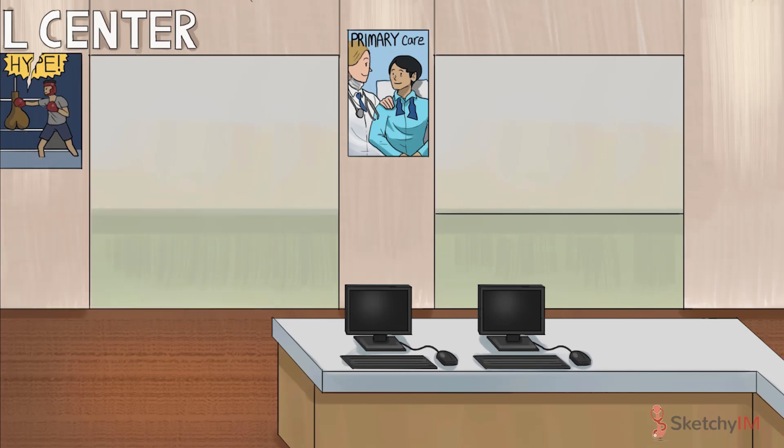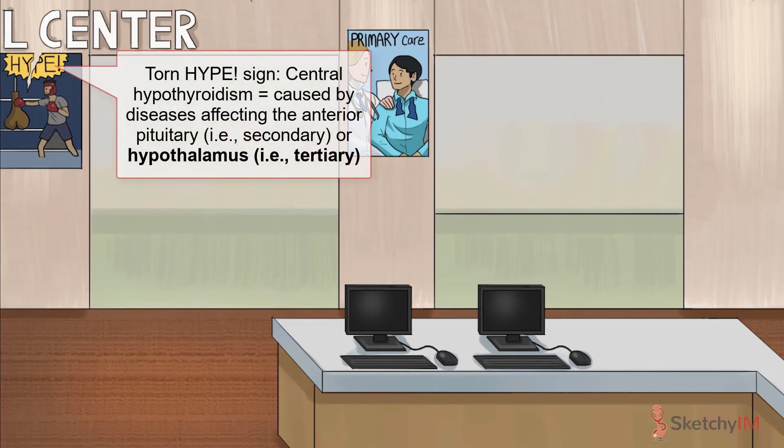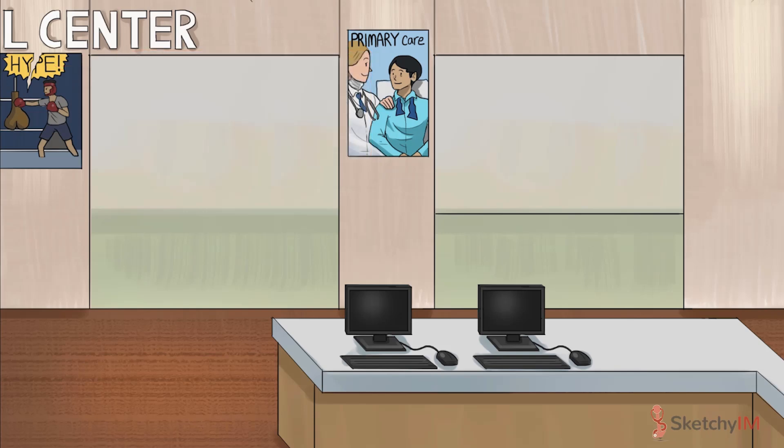Tertiary hypothyroidism goes even higher up on the axis, resulting from diseases affecting the hypothalamus, which is responsible for secreting thyrotropin-releasing hormone, aka TRH. At Sketchy, hypothalamic dysfunction is represented by the torn HYPE press release poster advertising that boxing match. Central hypothyroidism is a lot less common than primary hypothyroidism, making up only one percent of all cases of hypothyroidism overall.